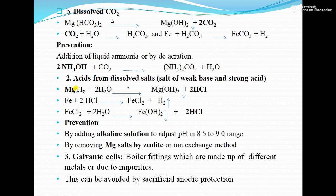Next is corrosion from acid produced by dissolved salts — salts of a weak base and strong acid. For example, magnesium chloride (MgCl₂): on heating, MgCl₂ converts into magnesium hydroxide and two molecules of hydrochloric acid (HCl). This HCl reacts with the boiler metal (Fe) to form ferrous chloride and hydrogen gas. That ferrous chloride reacts again with water giving ferrous hydroxide and two molecules of HCl, which again attacks the Fe metal — so the reaction continues because HCl regenerates.